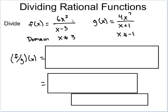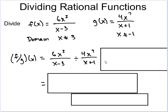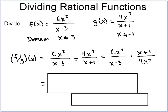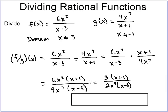Here are the two functions we're going to divide: 6x² over (x minus 3), divided by 4x⁷ over (x plus 1). The domains are x cannot equal 3 and x cannot equal negative 1. We set them up as a division, then flip the second fraction to convert to multiplication. Multiplying straight across gives us 6x²(x plus 1) over 4x⁷(x minus 3), and after reducing we get 3(x plus 1) over 2x⁴(x minus 3).